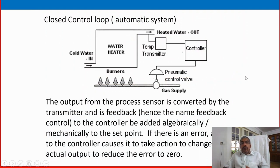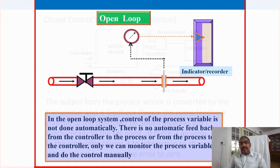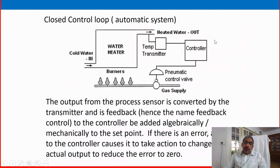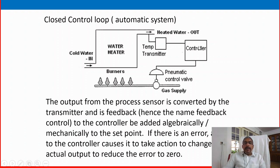In a closed control loop, compared to the previous open loop example where an operator was standing by, we have removed the operator and put an electronic or pneumatic controller — the rest of the things remain the same. The output from the process sensor is converted by the transmitter and fed back — hence the name feedback control — added algebraically or mechanically to the set point. If there is an error, the signal to the controller causes it to take action to change the actual output to reduce the error to zero. The controller compares the set point with the current process variable value coming from the temperature transmitter, and the output is sent to the control valve to maintain the water heater temperature at the desired value.